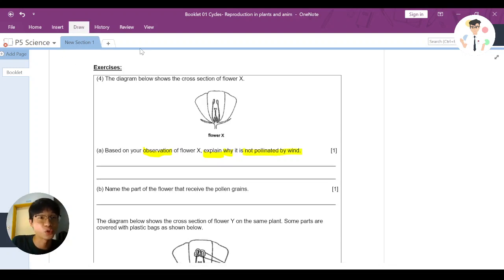So we can see this is flower X. The first thing you should know is this is a flower with very beautiful and large petals. So for sure, this is animal pollination or animal pollinated. It will be pollinated by animal.